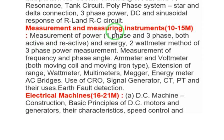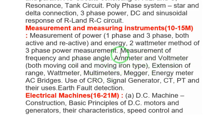Measurement and Measuring Instruments carries 10 to 15 marks. Major topics are single-phase and three-phase active and reactive power, the two-wattmeter method, frequency and phase angle calculations, and ammeter and voltmeter extension. For extending the ammeter range, the shunt resistance formula is R_sh = R_m / (m - 1), and for voltmeter extension, R_s = R_m × (m - 1).